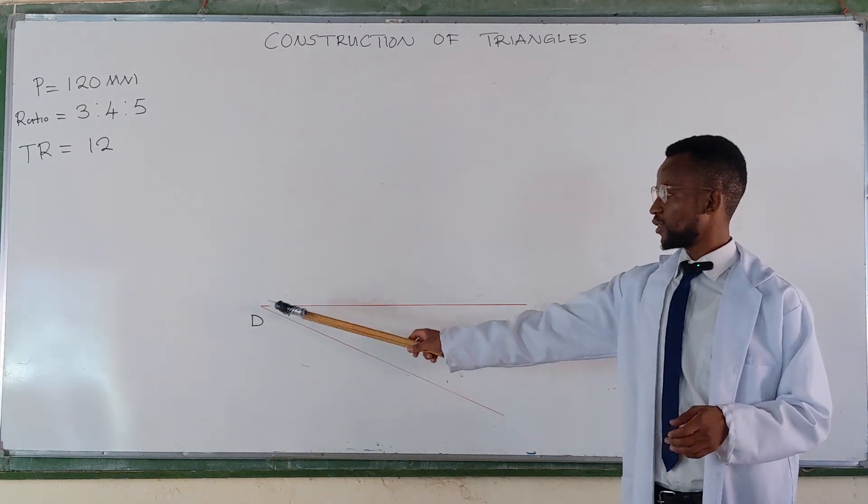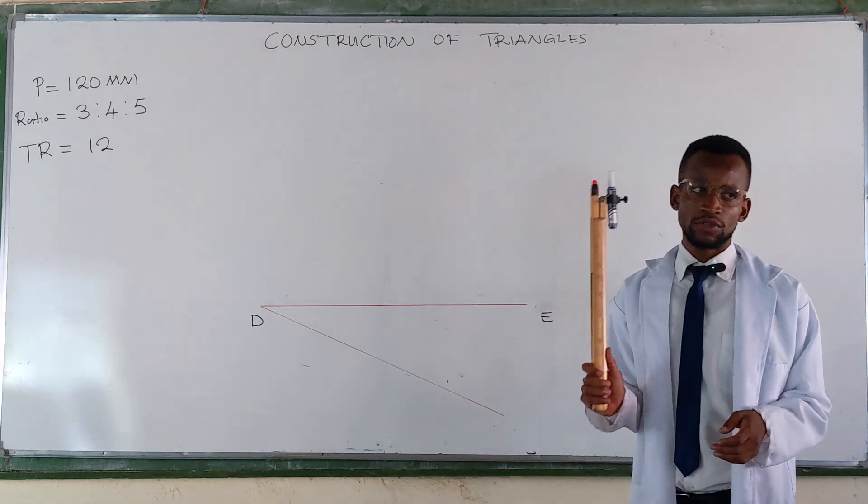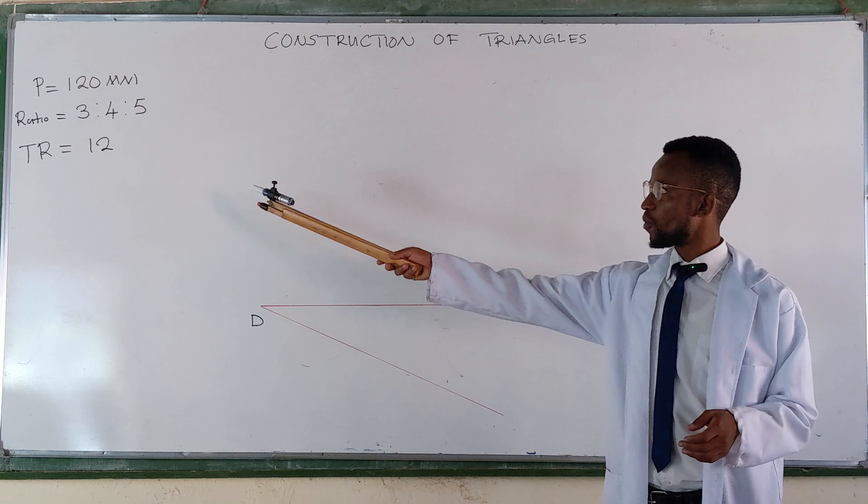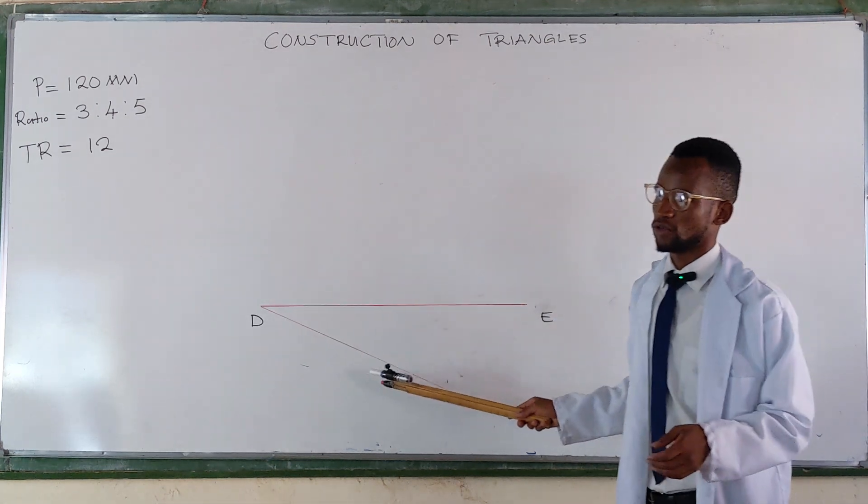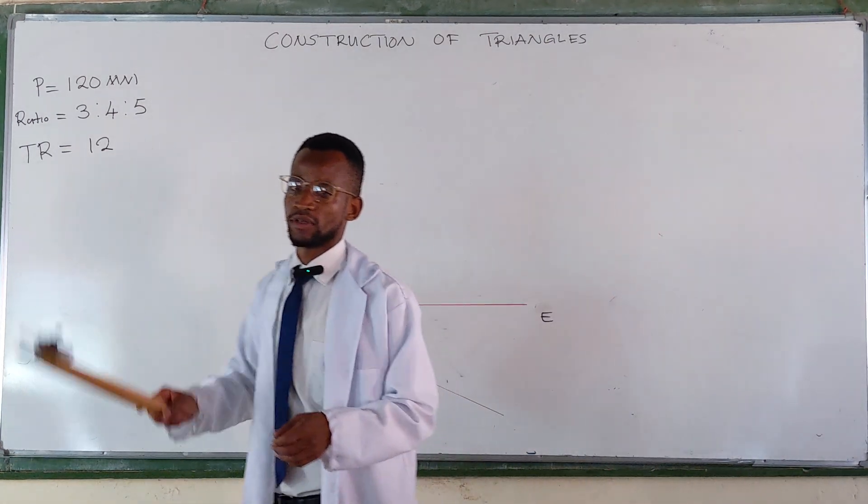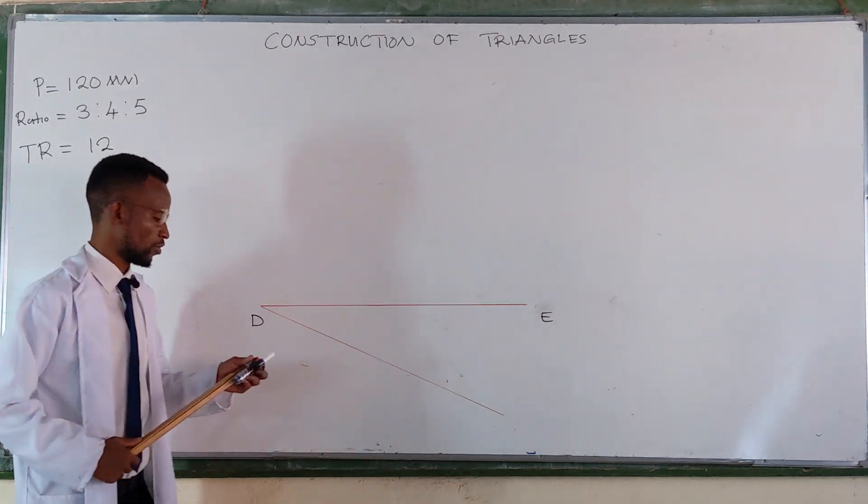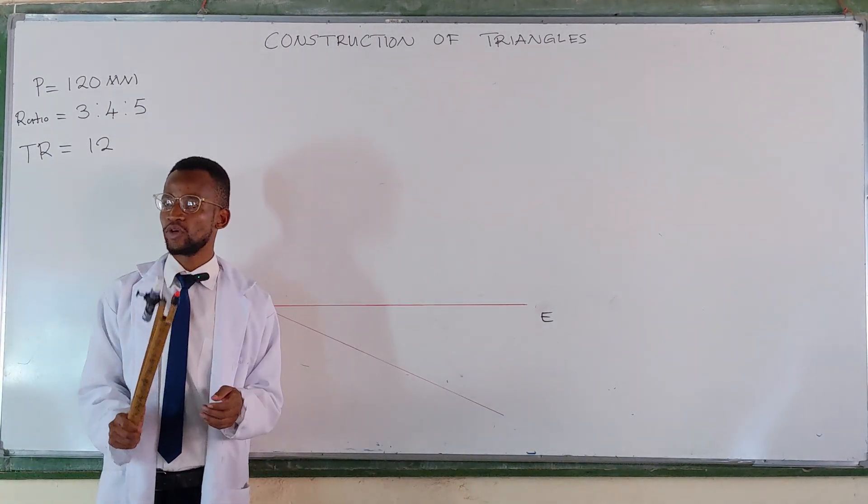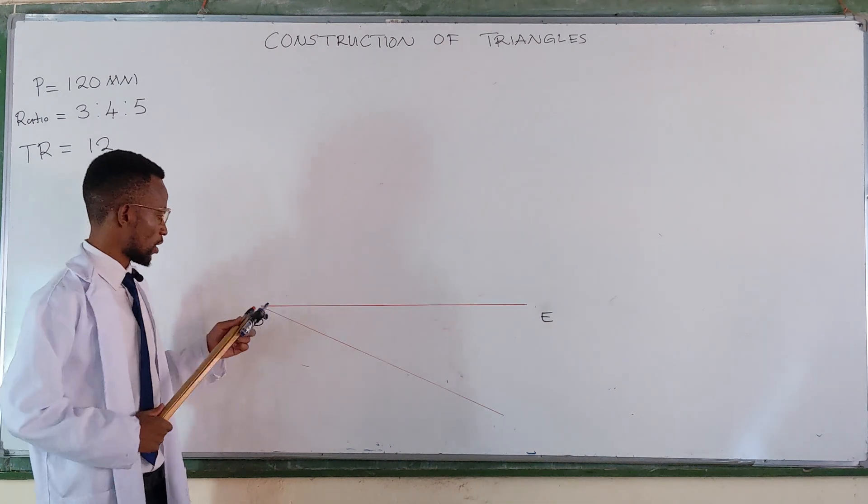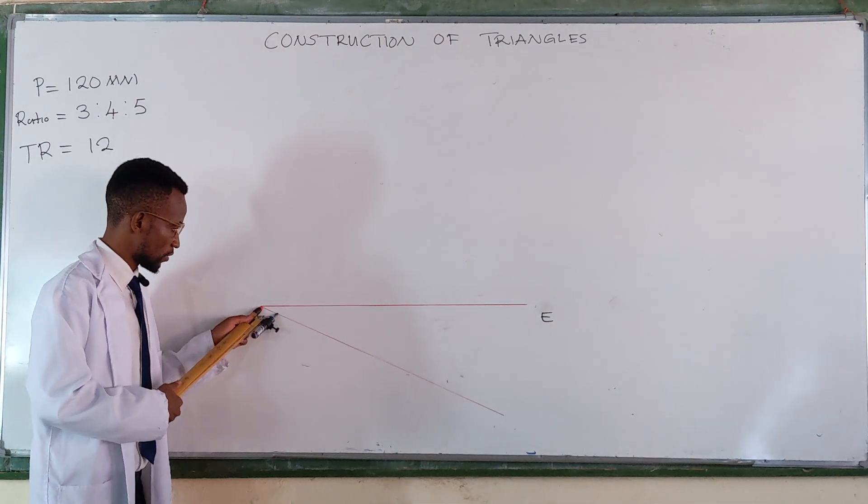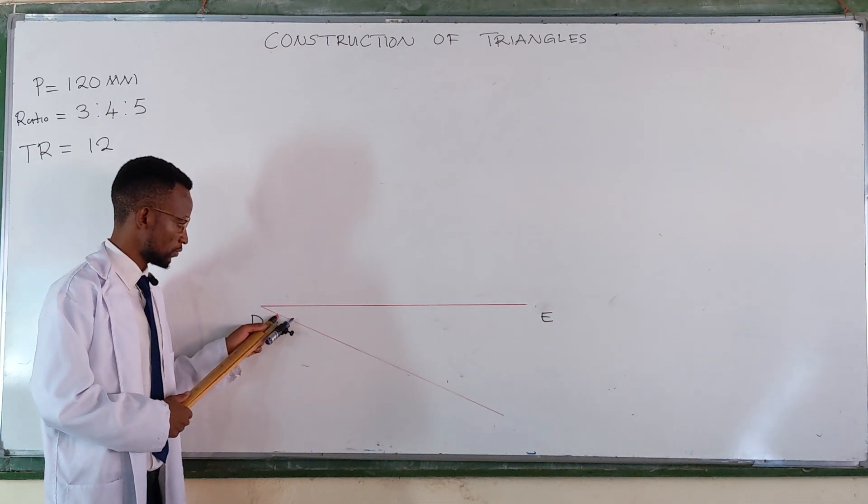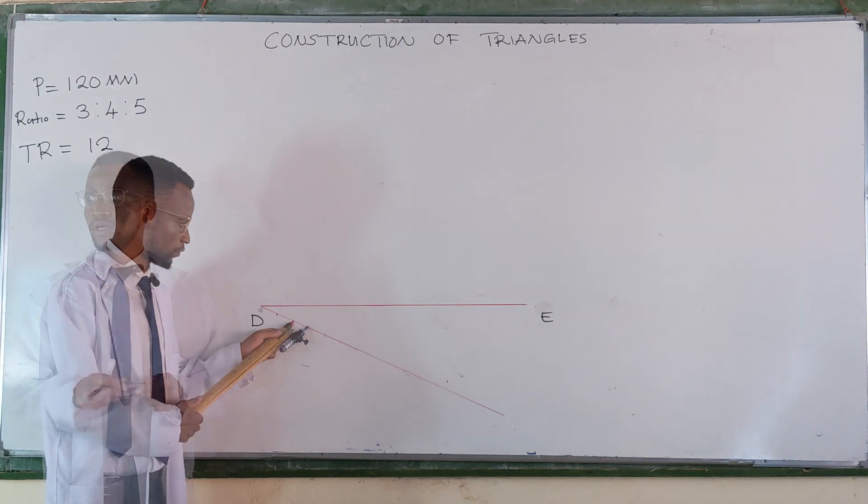After drawing the slant line here, you make 12 equal marks on the slant line because 12 is the total ratio. So you make 12 equal marks on the slant line. You get your compass, open it to any convenient radius of your choice, and then you start marking. One, two.